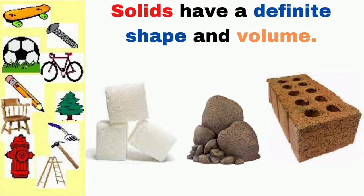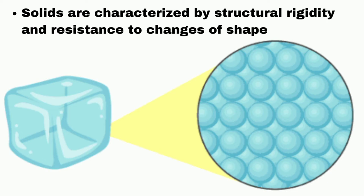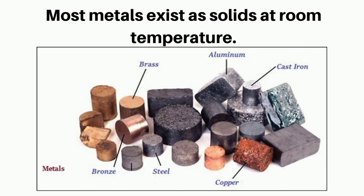Solids have a definite shape and volume. Solids are characterized by structural rigidity and resistance to changes of shape or volume. Most metals exist as solids at room temperature.